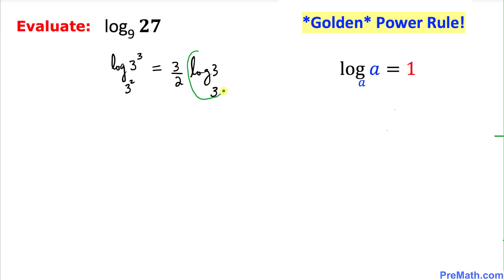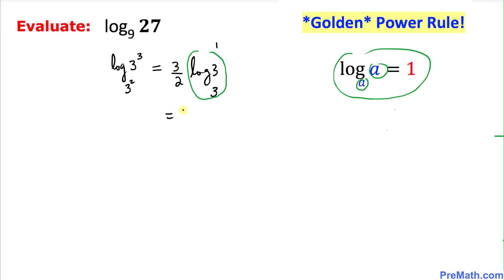Now let's look at log of 3 with base 3. Remember: when the argument and base are the same, it is always equal to 1. Since our base and argument are both 3, that equals 1. So we write 3 over 2 times 1, and our answer turns out to be 3 over 2.